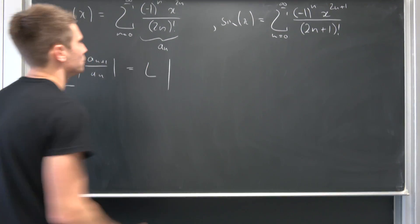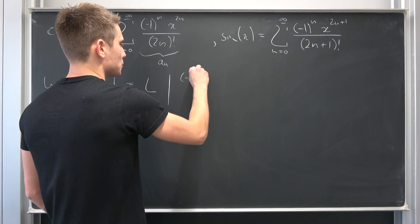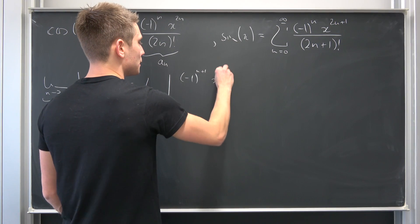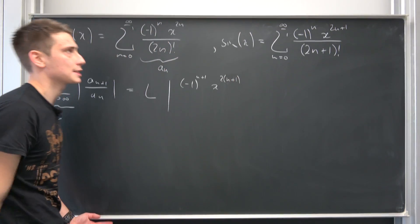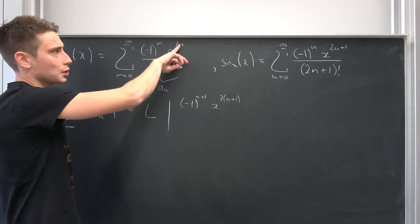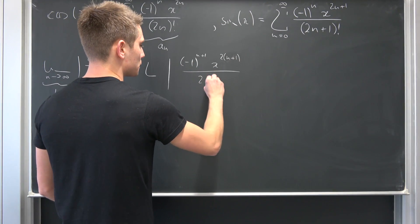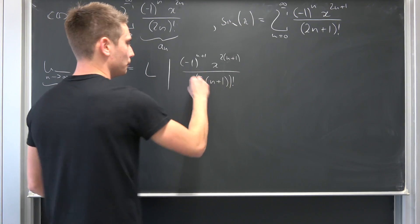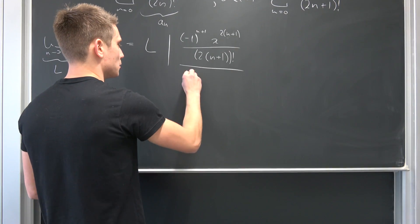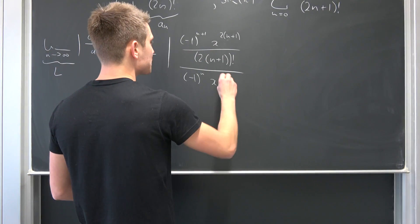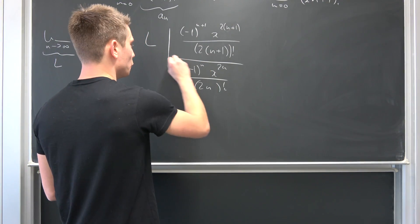We are going to take the limit of the absolute value — this is going to be quite a mess. Plug n+1 in first: so negative one to the (n+1) power, x to the (2n+2) power. Don't make a mistake here — you have to plug n+1 in separately, over (2(n+1)) factorial. Over this term itself: negative one to the nth power, x to the 2n power over (2n) factorial.